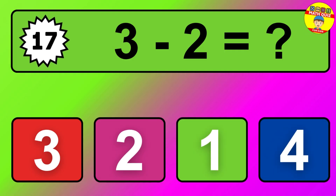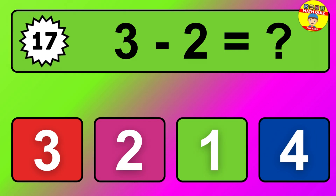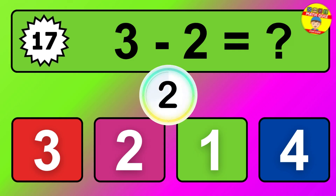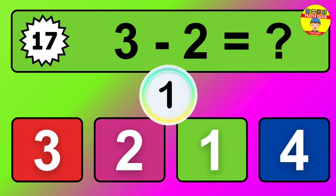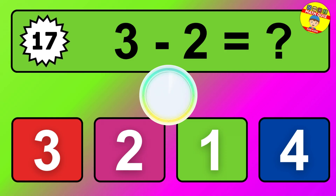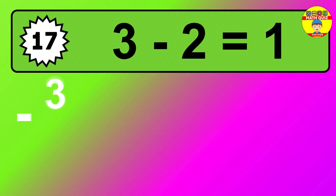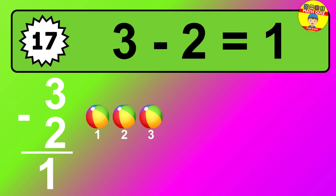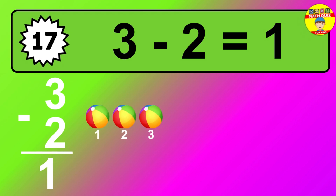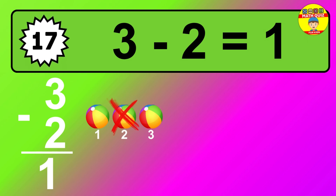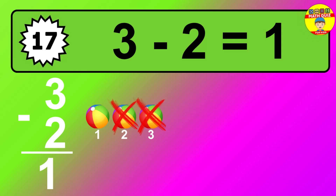Question 17. 3 minus 2 equals what? The answer is 3 minus 2 is 1. Let's count it: 1.